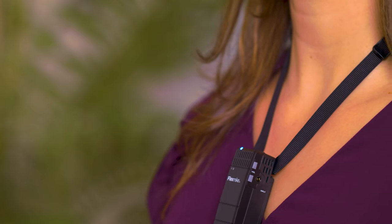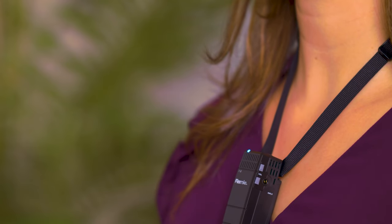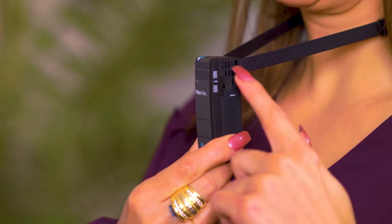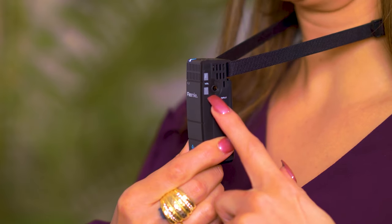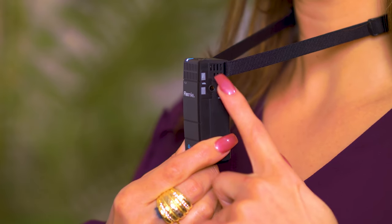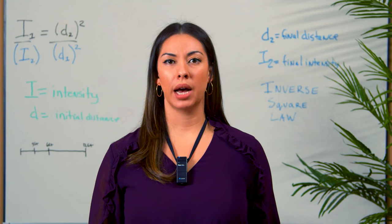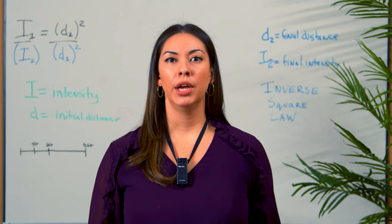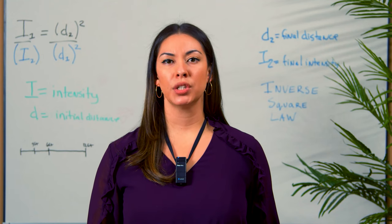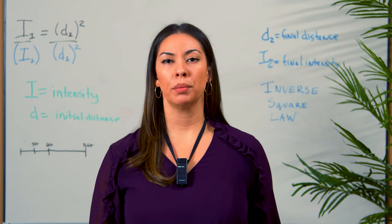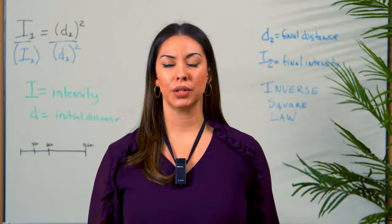If you do need to turn the volume up or down slightly, you can press the volume up and down arrows on the side of the FlexMic. If the volume is still too high or low, you may need to adjust the volume level at the system or media connector.